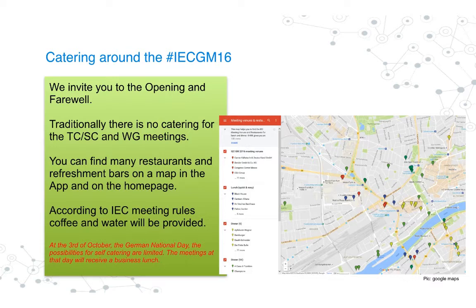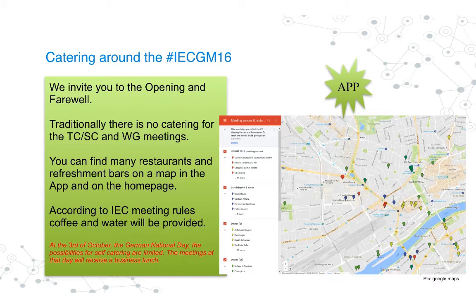We have to mention the 3rd of October. It is our national holiday — it falls on a Monday. On the 3rd of October we take care of lunch for our experts here in the VDE building. On this map you can see there is a large choice of different restaurants in Frankfurt downtown near the venues. They are sorted by price level, or you can go to the app and find a link to Google Maps with all the details.